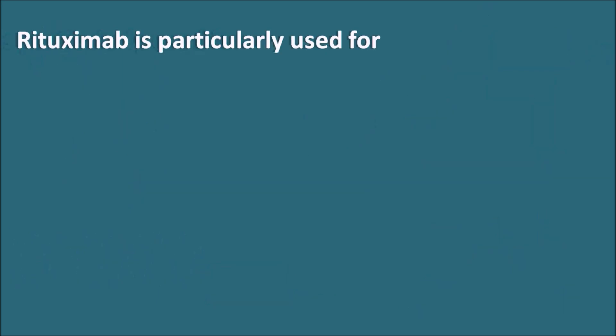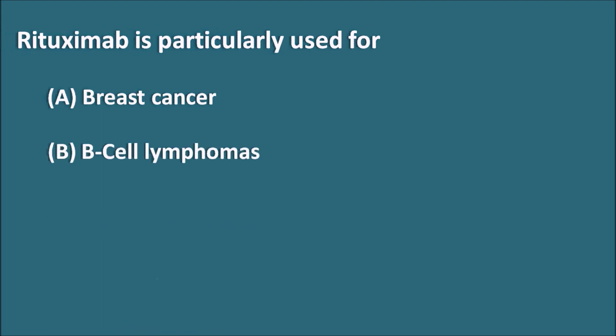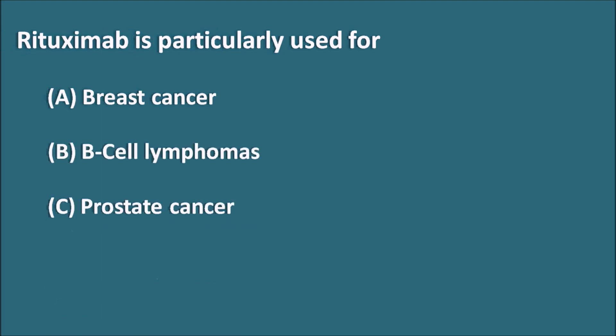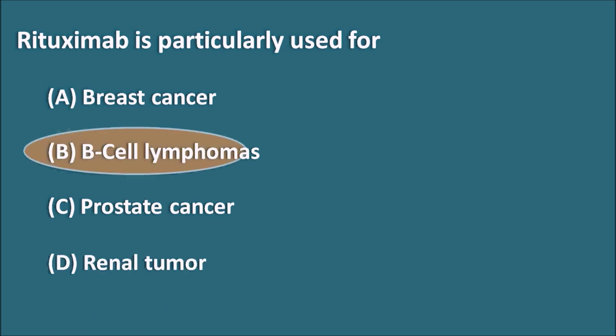Next question: Rituximab is particularly used for? Options: A. Breast cancer, B. B-cell lymphomas, C. Prostate cancer, D. Renal tumor. The correct answer is B-cell lymphomas.